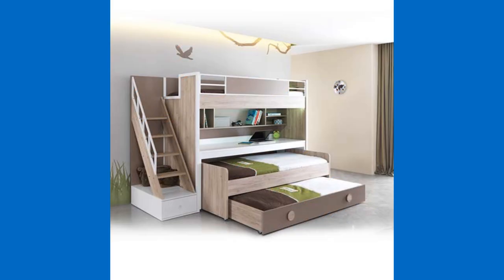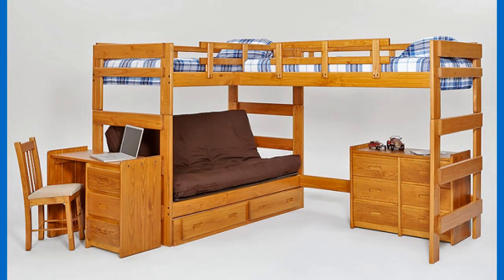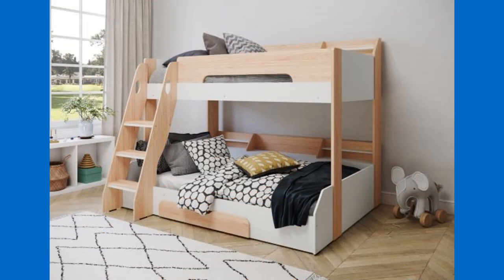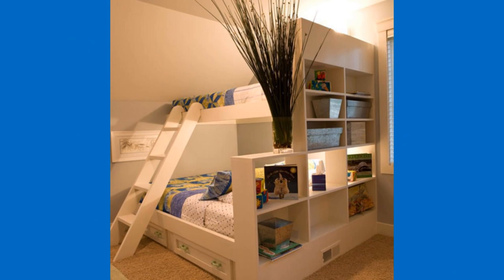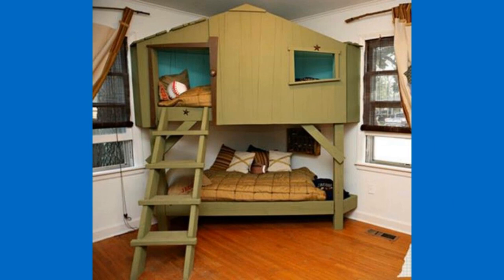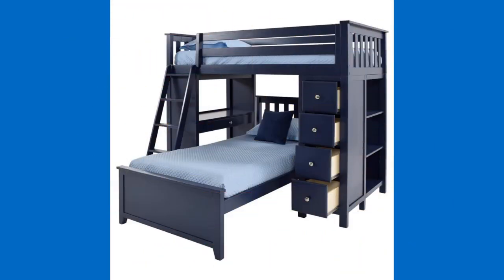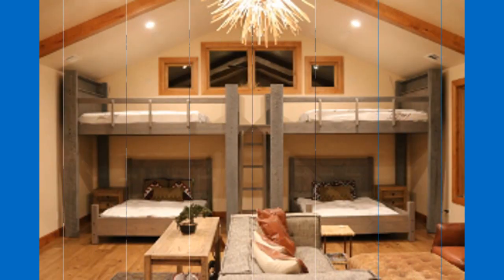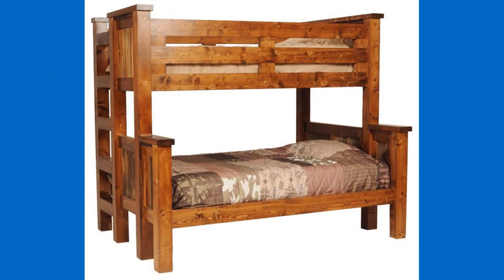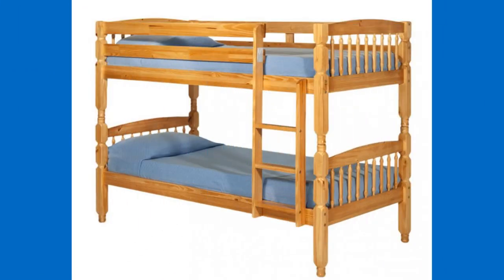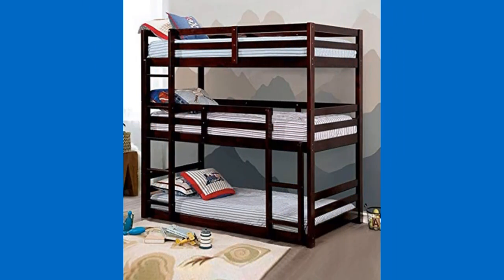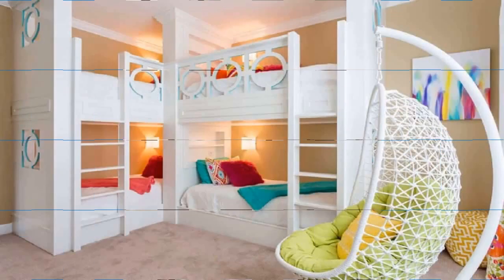Bunk beds have been modified to suit the needs of specific settings in the modern world, giving customers the ability to choose from a number of different bunk bed types. Number one: twin-over-twin bunk beds. This is often considered the traditional bunk bed, with two twin-sized beds mounted on top of each other. A ladder is usually provided that allows a person to access the bed mounted on top. Number two: twin-over-double bunk beds.